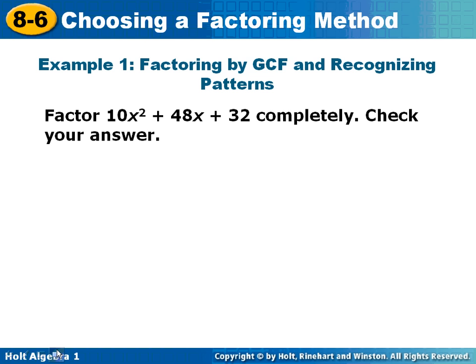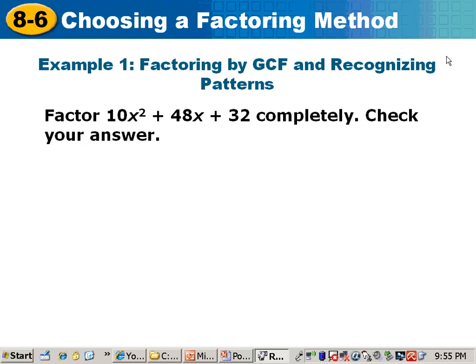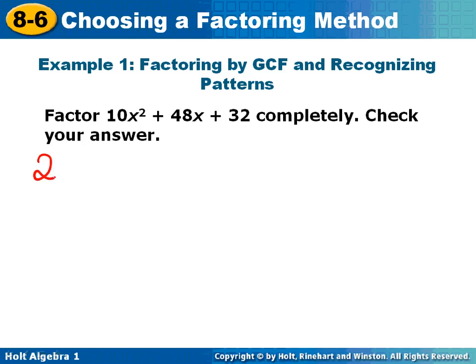Number one, I'm going to tell you what I see so that I can try to get you thinking the same direction. Looking at this problem, I first try a greatest common factor. For a greatest common factor between 10, 48, and 32 is 2. So I'm going to first take out a 2.